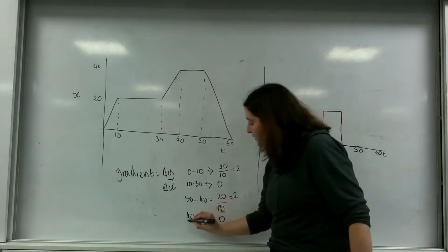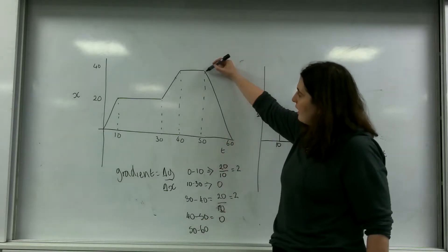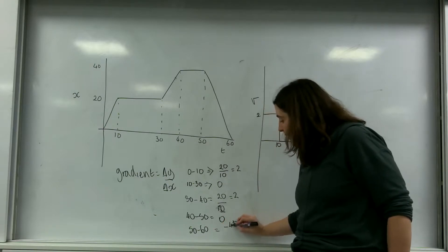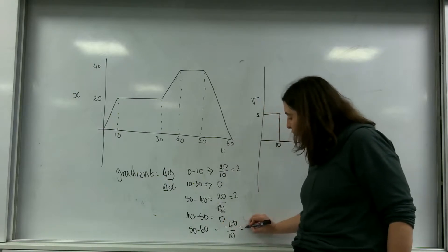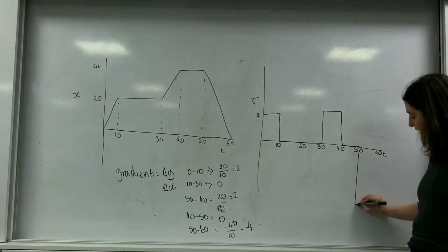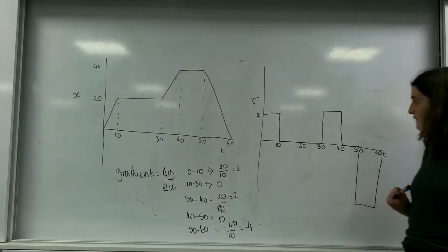But more importantly, between 50 and 60 I'm going down. So this is going to be negative 40 in 10 seconds which will be minus 4. So this will go down all the way down here to minus 4.